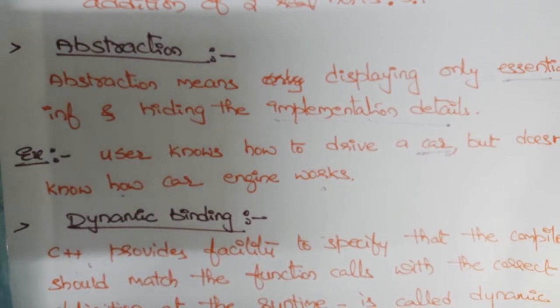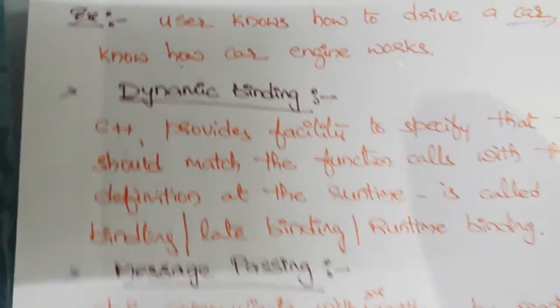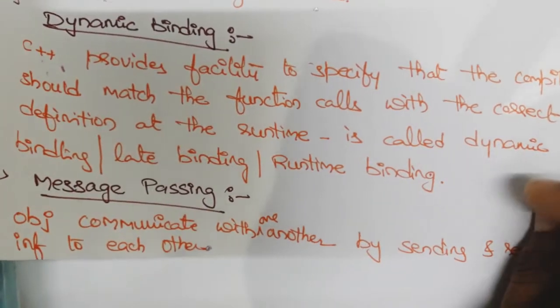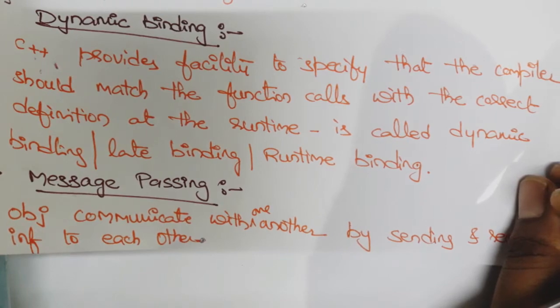Dynamic binding: C++ provides the facility to specify that the compiler should match function calls with the correct definition at runtime. This is called dynamic binding, late binding, or runtime binding.